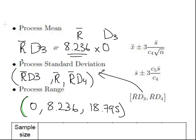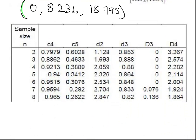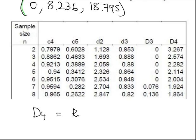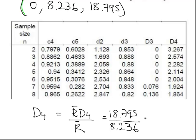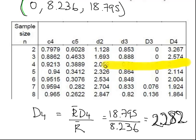What is D4? D4 is essentially the divisor of the two. D4 is R bar D4 divided by R bar, which is 18.795 divided by 8.236. Working that out on your calculators, you should get 2.282 approximately.